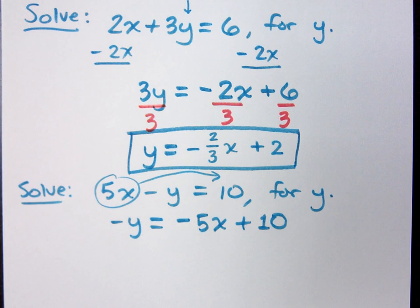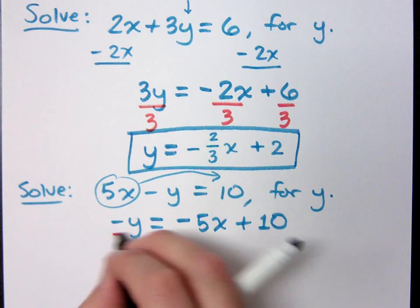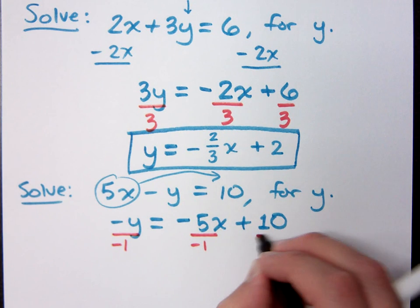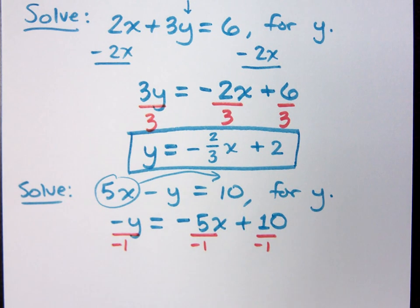How do I finish getting y by itself? Divide by negative 1. Divide by negative 1, right? We don't divide by the variable, do we? No. No, not what we're trying to solve for it.